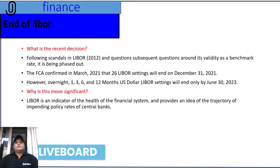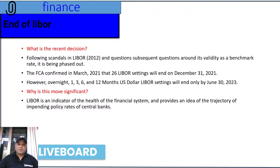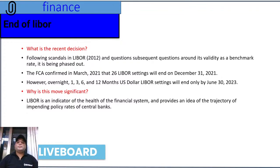According to recent decisions, there were some scandals while fixing the LIBOR rate, raising question marks around it. The FCA confirmed in March 2021 that 26 LIBOR settings will end on December 31st, 2021. This means nine LIBOR settings will not end. Of the total 35 settings, overnight, one month, three months, six months, and twelve months maturities denominated in US dollars will end only by June 30th, 2023, and are still in operation right now.